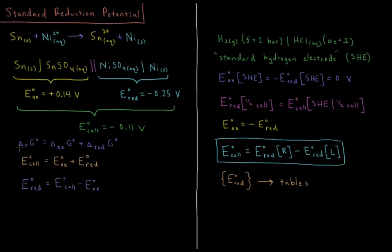Since the Gibbs energy is a state function and also extensive, the standard Gibbs energy of reaction is the standard Gibbs energy of oxidation plus the standard Gibbs energy of reduction. So our standard EMF of our cell is equal to the standard EMF of the oxidation plus the standard EMF of the reduction.